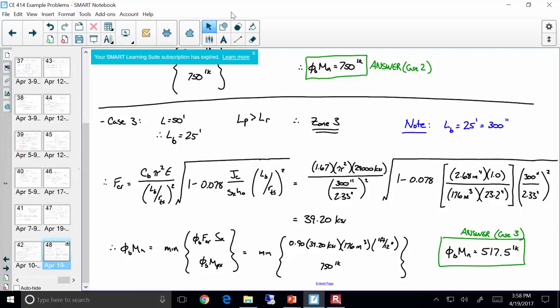So plug and chug, do a little bit of grunt work, and you end up finding that your critical buckling stress is about 39.2 KSI. Now notice that your C sub B was built into F_CR. It wasn't built into phi M_N, so don't multiply by that twice. However, you do need to multiply by phi. So multiply by 0.9 F_CR S_X, and comparing that against your plastic moment, will give you your final answer.